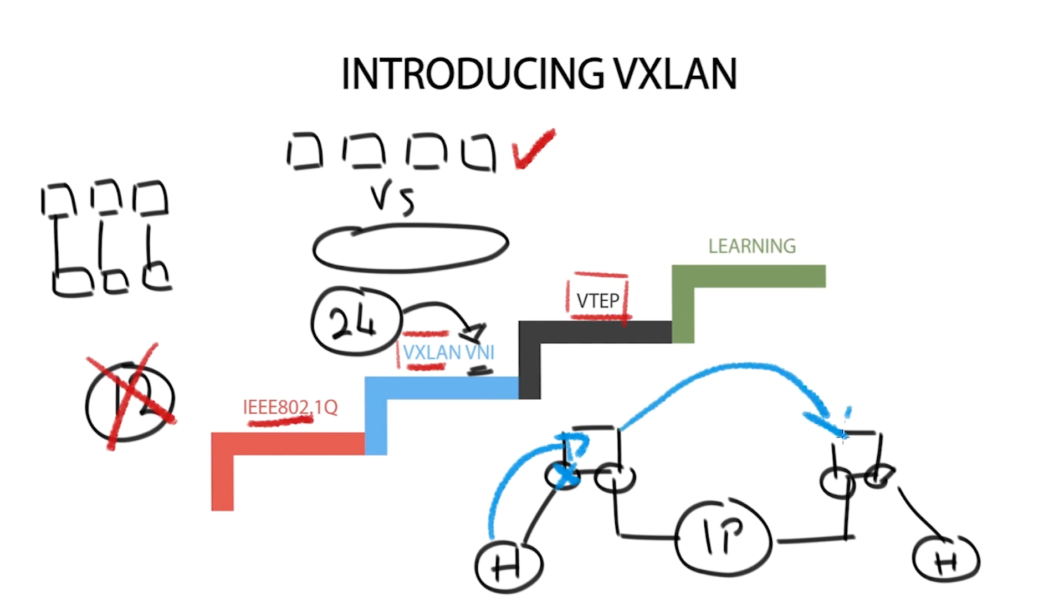Secondly, it receives VXLAN traffic originating from the remote VTAP node, decapsulates it and forwards it to the local connected endpoint.